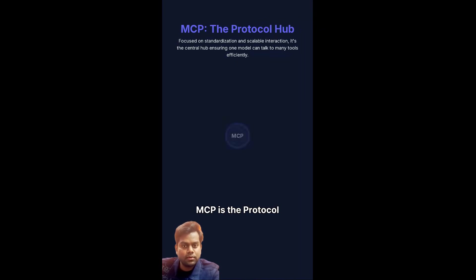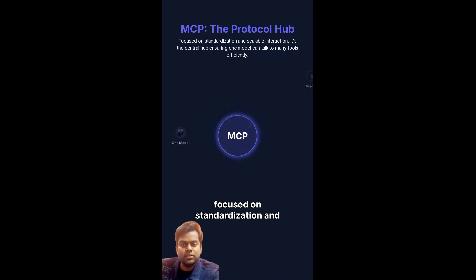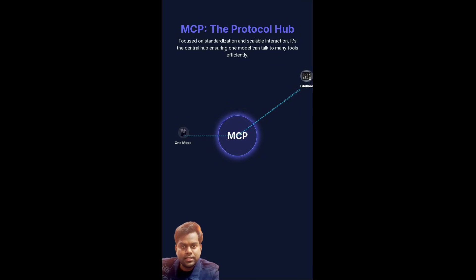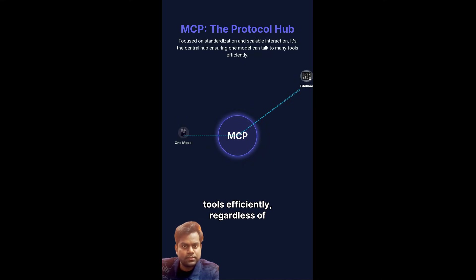It's the agent architect designing the smart interaction. MCP is the protocol focused on standardization and scalable interaction. It's the central hub that ensures one model can talk to many tools efficiently, regardless of the tool's complexity.